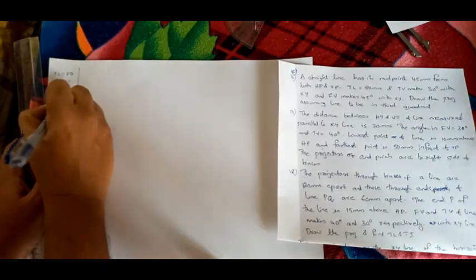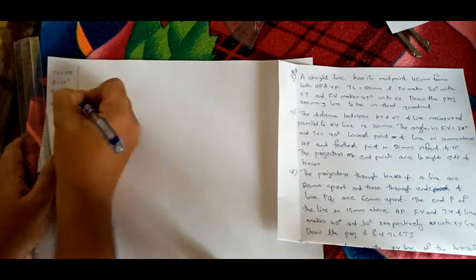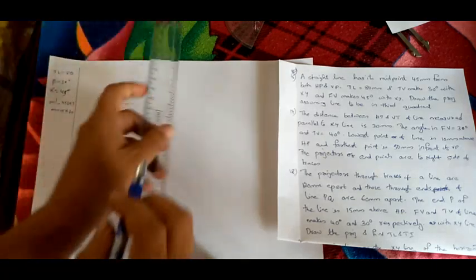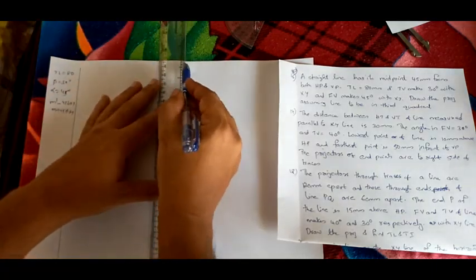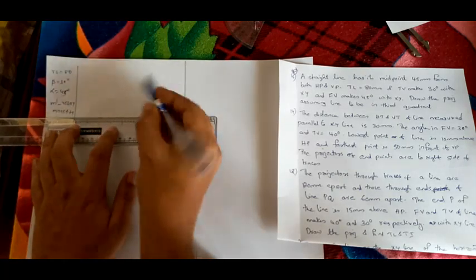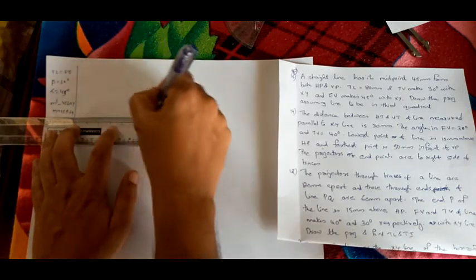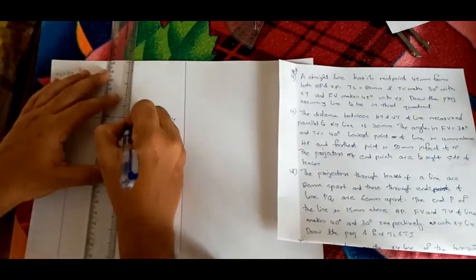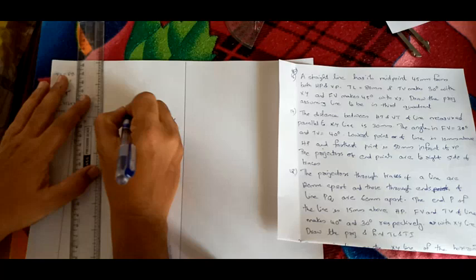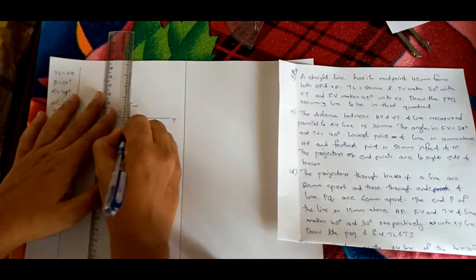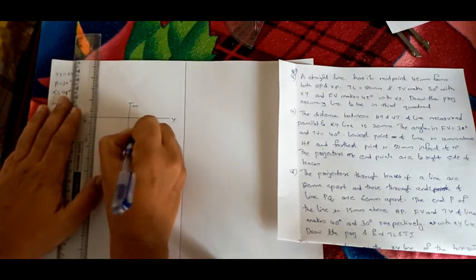Draw the projection assuming the line to be in the third quadrant. That means m' is 45mm below the XY line and m is 45mm above the XY line — this is the third quadrant. First we will draw the XY line, then mark m and m'. m is 45mm above the XY line and m' is 45mm below the XY line.